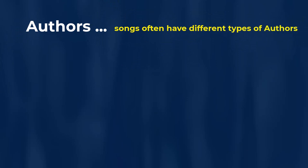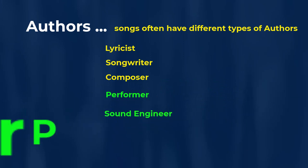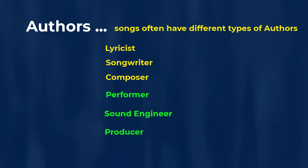With songs and music, there are often different types of roles that an author may play. For example — and this is not necessarily an exhaustive list — you could have a lyricist, a songwriter, a composer, a performer of the music, a sound engineer, a producer, and obviously one or more musicians. A musician could also act in any of those other roles: lyricist, songwriter, composer, performer, sound engineer, and/or producer.